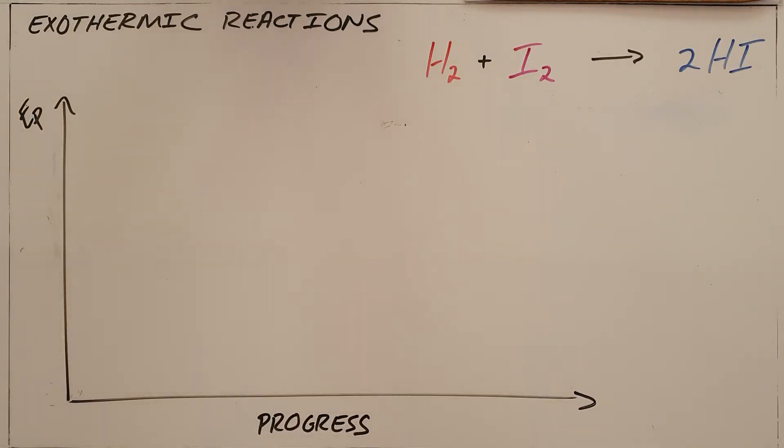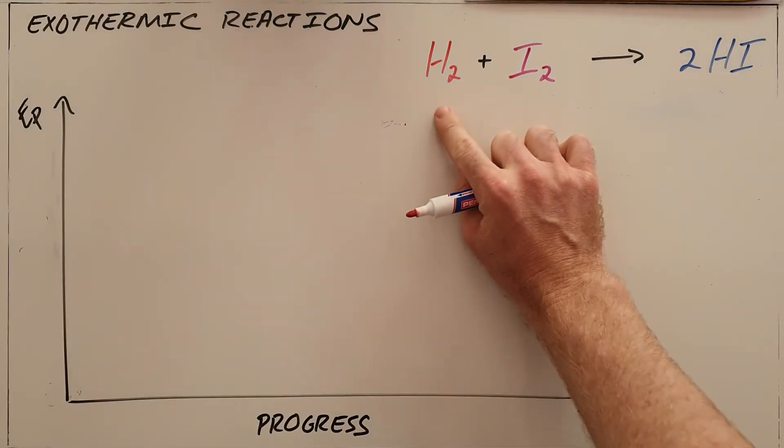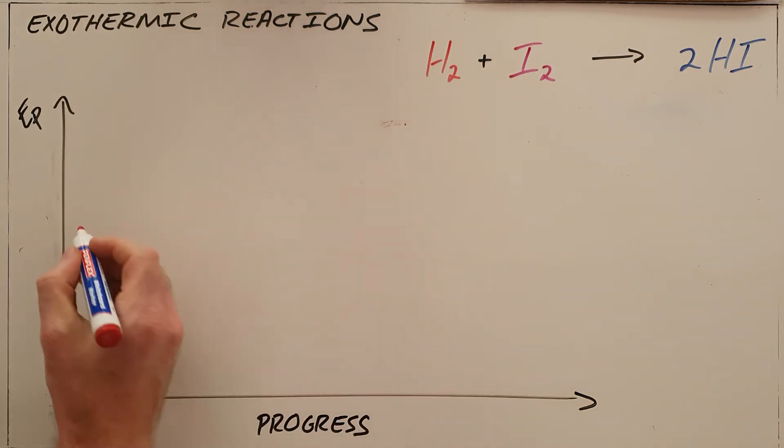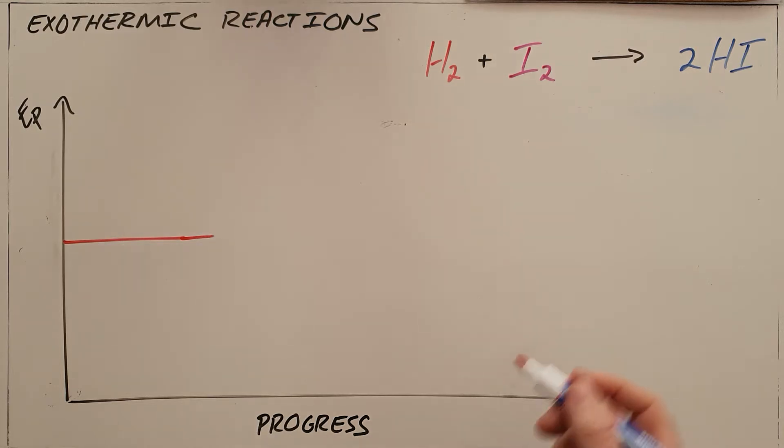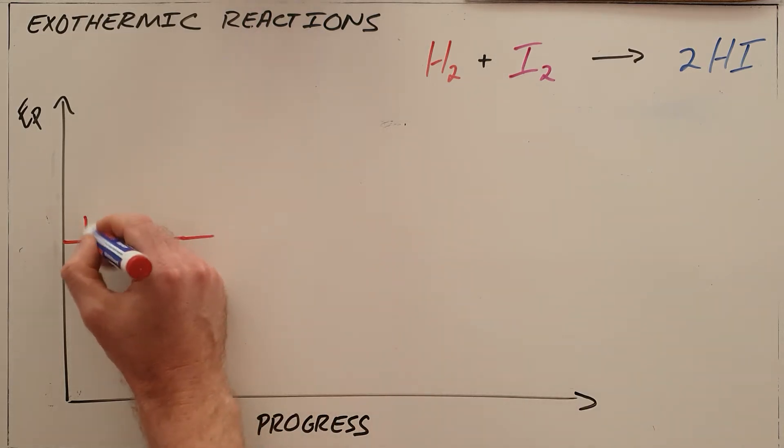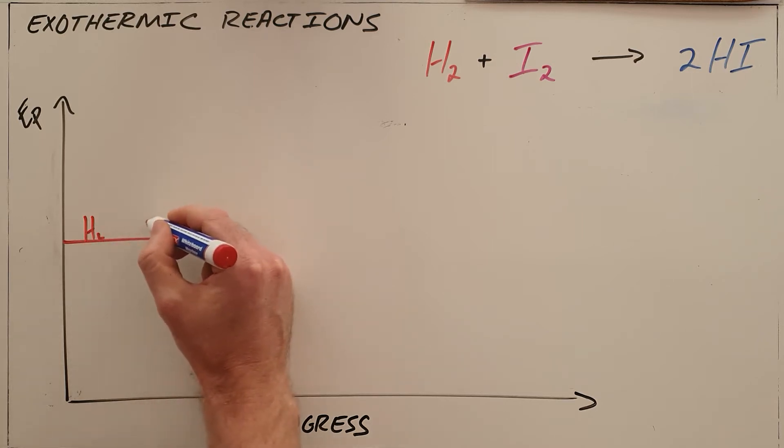We know that chemical reactions happen because atoms want to form bonds that make them more stable, and as a result of that stability we can say that they have a certain amount of potential energy. So in a typical reaction we would start out with our reactants, in this case that is hydrogen and iodine, and as a result of their stability or the stability of those bonds they have a certain potential energy, and we can write here that that is hydrogen and iodine's combined potential energy.